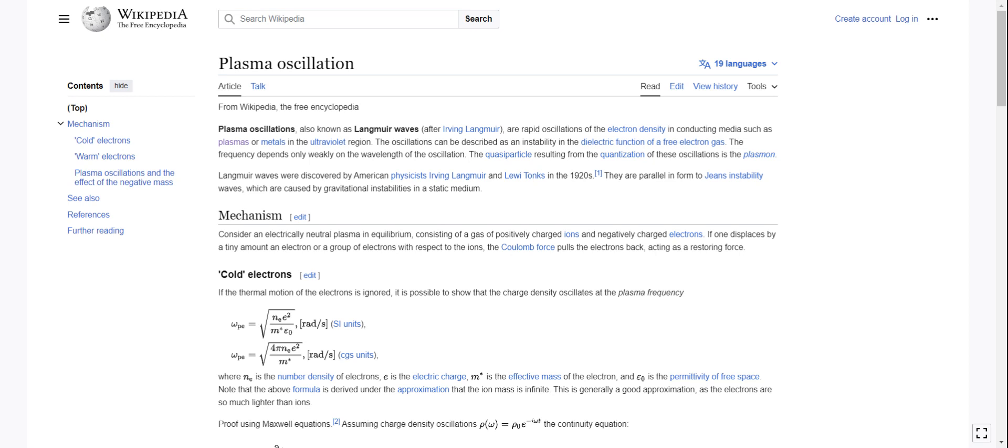Langmuir waves were discovered by American physicists Irving Langmuir and Louis Tonks in the 1920s. They are parallel in form to Jeans instability waves, which are caused by gravitational instabilities in a static medium.